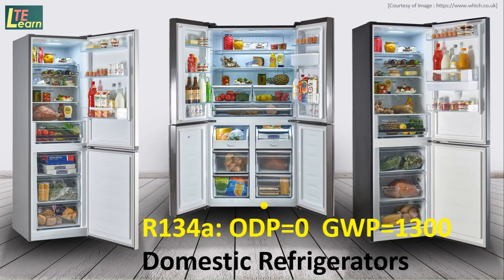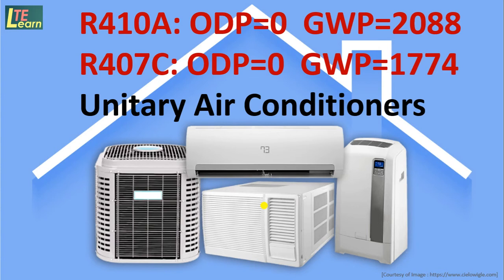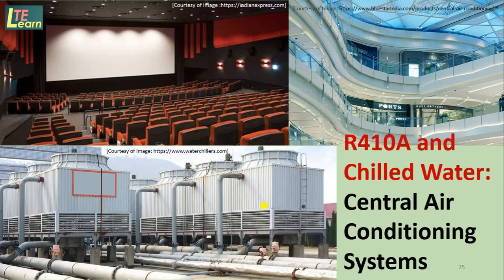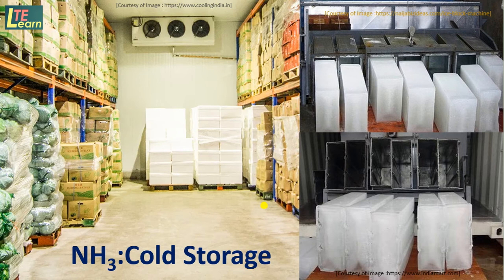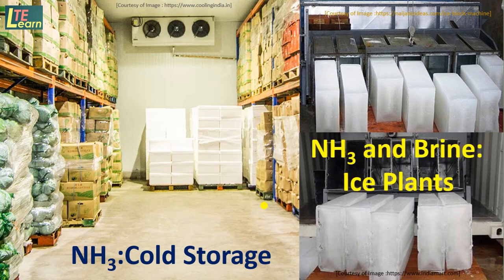Refrigerant R134a, also called tetrafluoroethane, has an ODP of zero and is used in domestic refrigerators. Unitary air conditioners use refrigerants R410A and R407C. Refrigerant R410A is used as a primary refrigerant in central air conditioning systems, while chilled water is used as a secondary refrigerant. Ammonia is used in cold storage, and ice plants use ammonia as a primary refrigerant and brine as a secondary refrigerant.